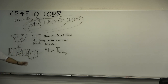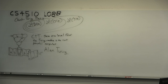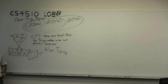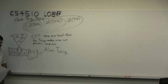Alonzo Church was a much older professor at Princeton. Alan Turing was 22 when he solved this very big, very dramatic open problem.